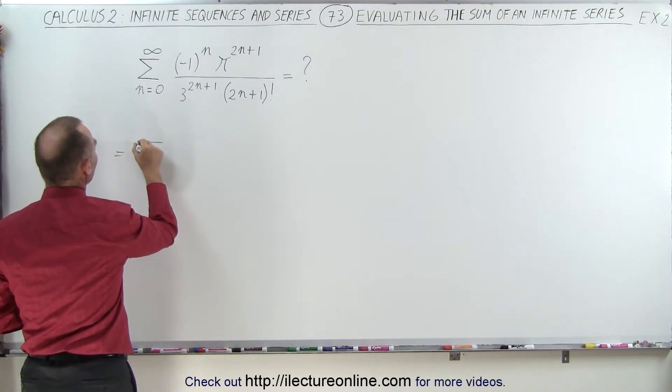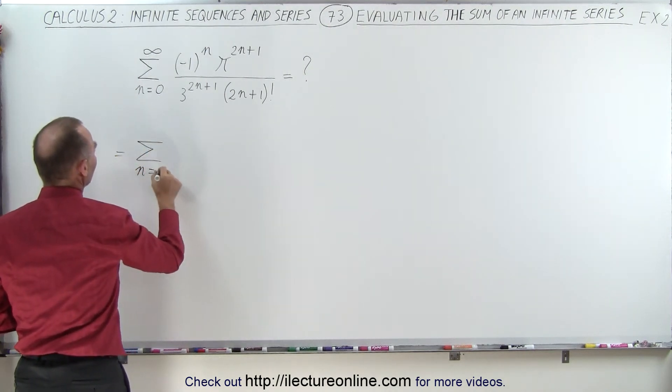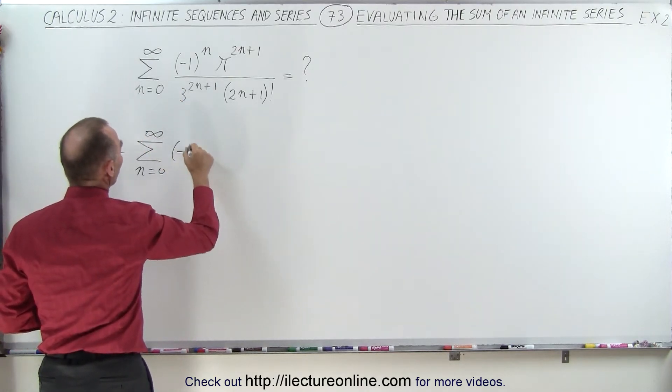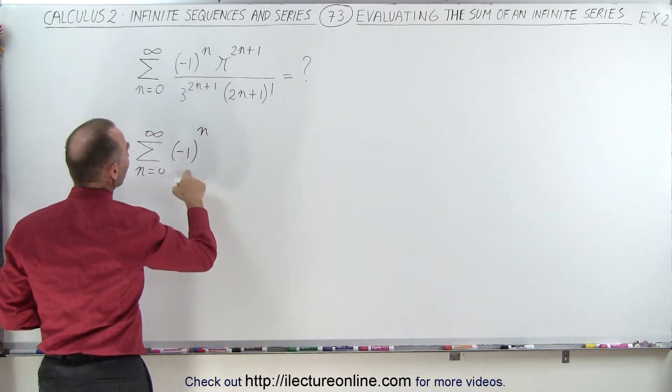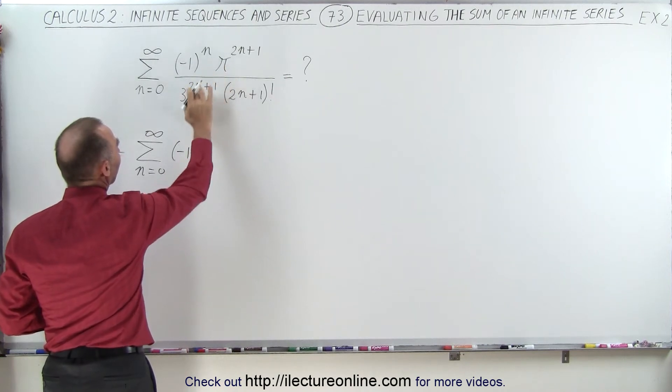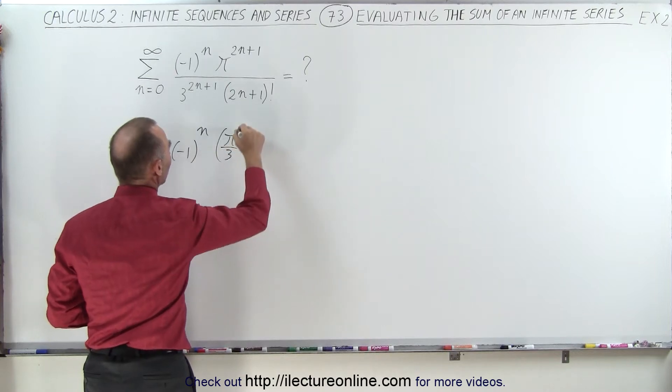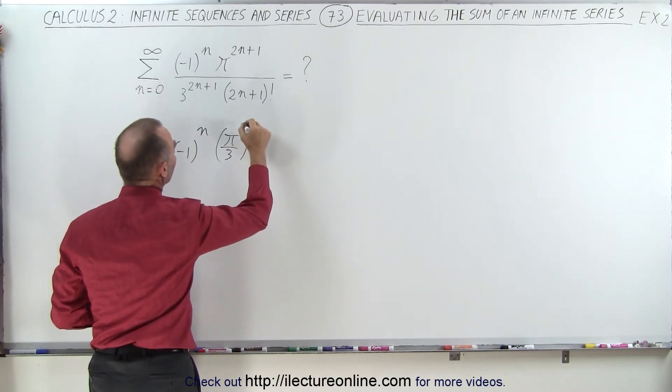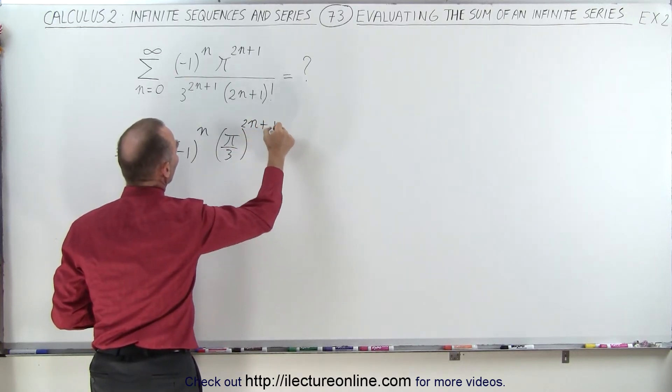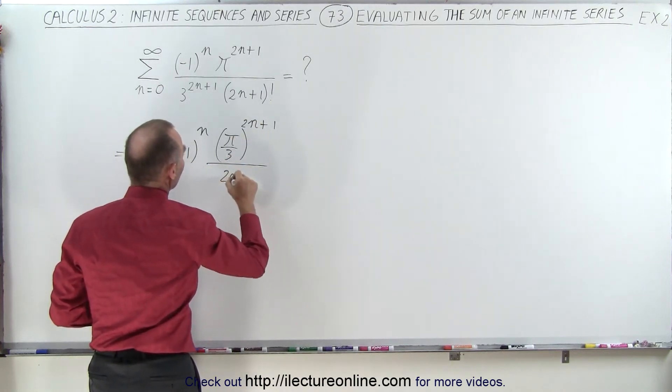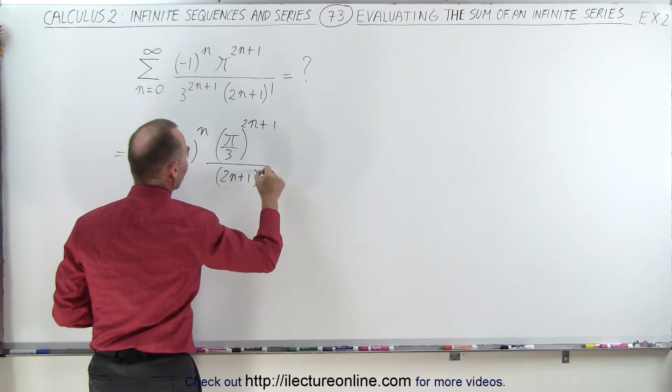This can be written as the infinite sum from n equals 0 to infinity of minus 1 to the n power, but now we're going to put both of these, the pi and the 3 in the numerator, write it like pi divided by 3, and the whole thing raised to the 2n plus 1 power, and divide this by 2n plus 1 factorial.